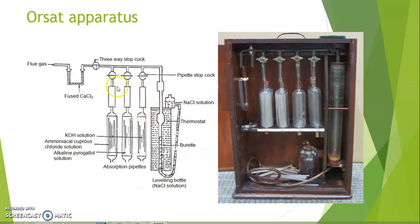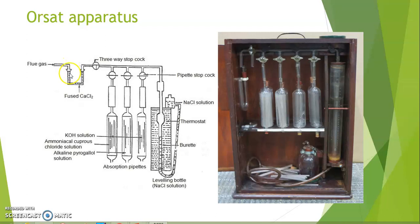The flue gas enters through the inlet. A calcium chloride guard tube is used at the inlet to remove moisture from the incoming gas. If there is moisture in the gas, it can interfere with the analysis. To avoid this, a stopper with calcium chloride is used to absorb moisture before the gas enters the absorption chambers.